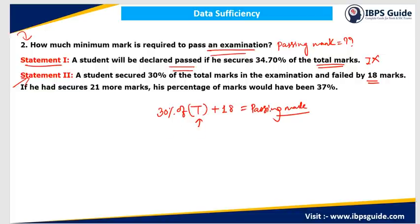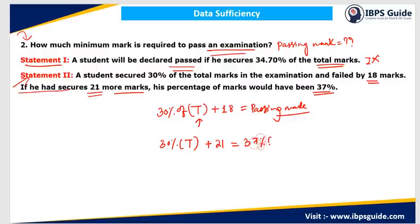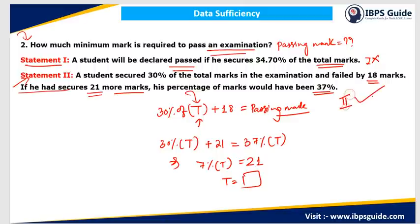Statement 2 further tells us that if the student had secured 21 more marks, his percentage would be 37%. Originally he scored 30% of total marks T, and 30% of T plus 21 equals 37% of T. This gives us 7% of T equals 21, so T can be found. Once T is known, substituting back gives the passing mark. So statement 2 alone is sufficient, and the answer is option B.